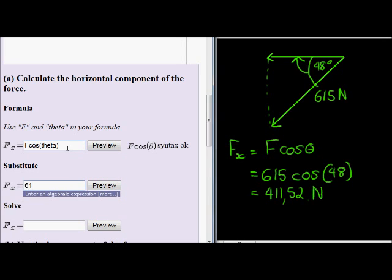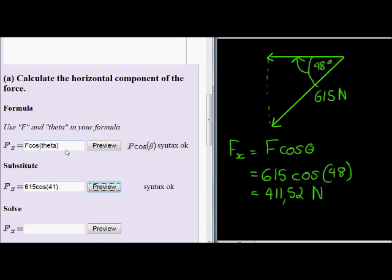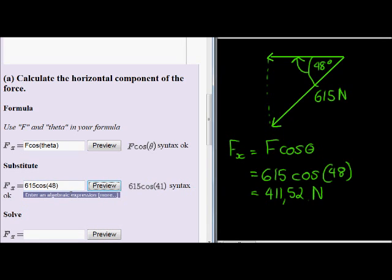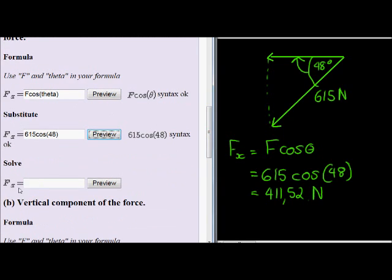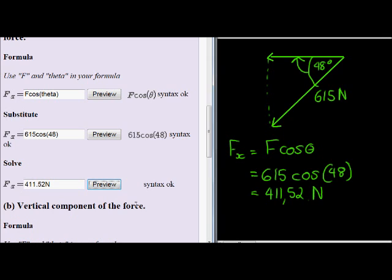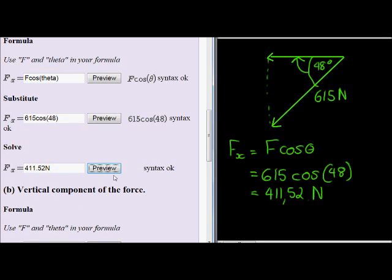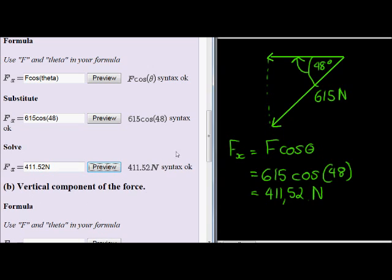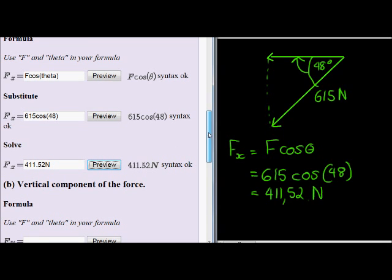Next, we substitute with 615 cos of 48. We know that looks fine, and then enter our answer, 411.52 newtons. Let's preview. Perfect.